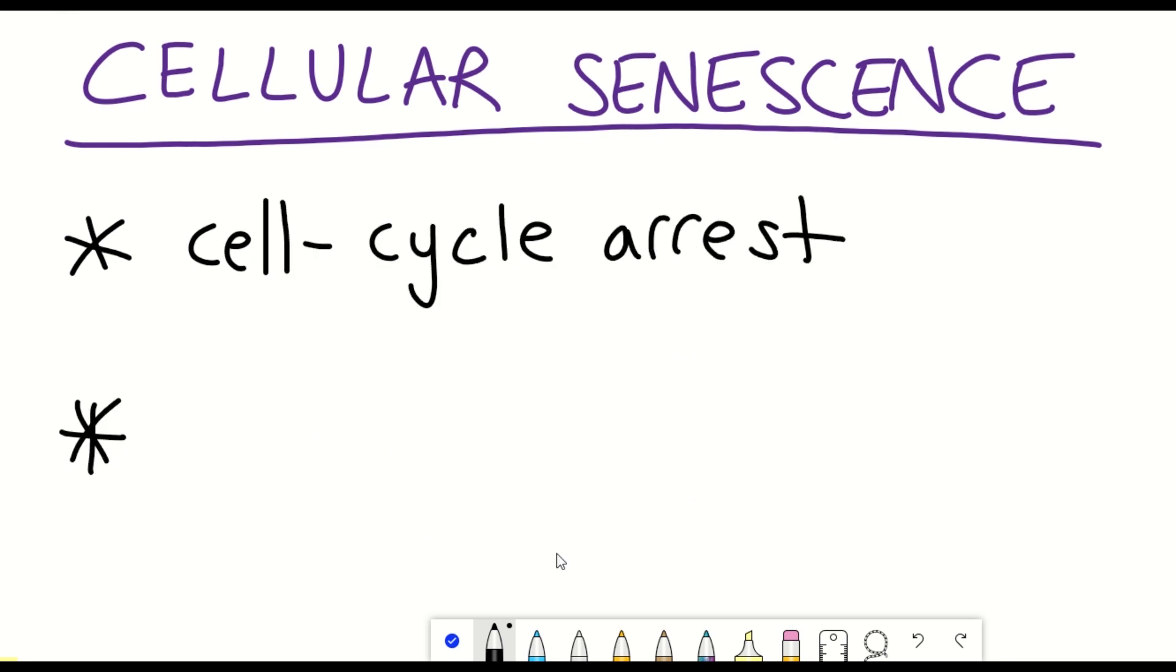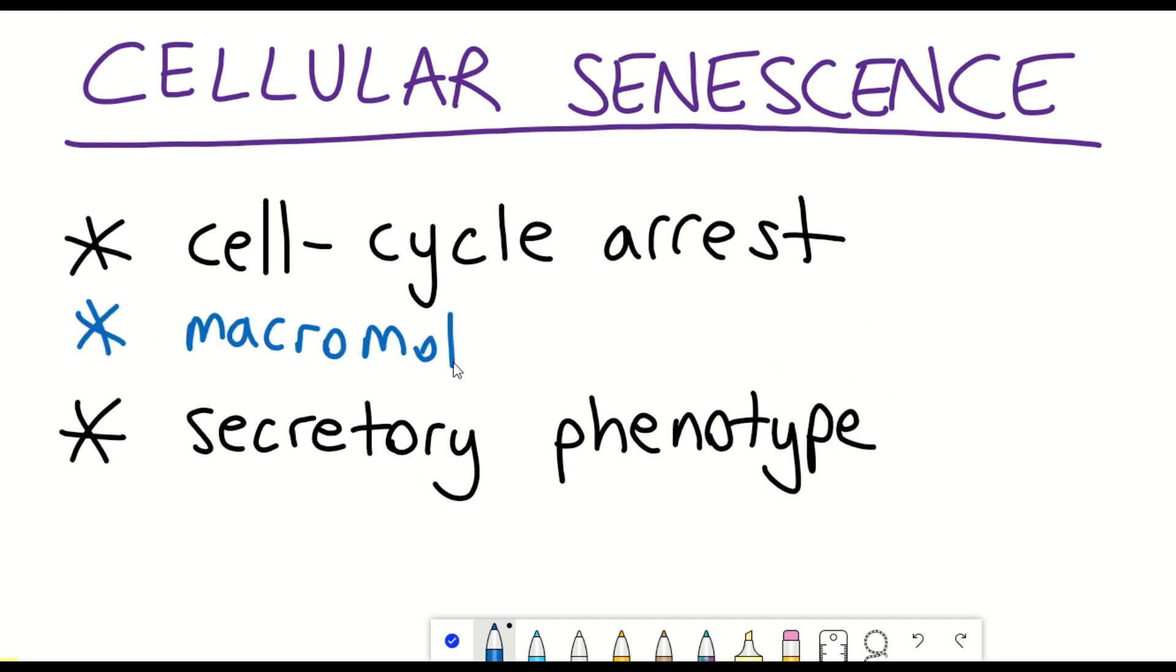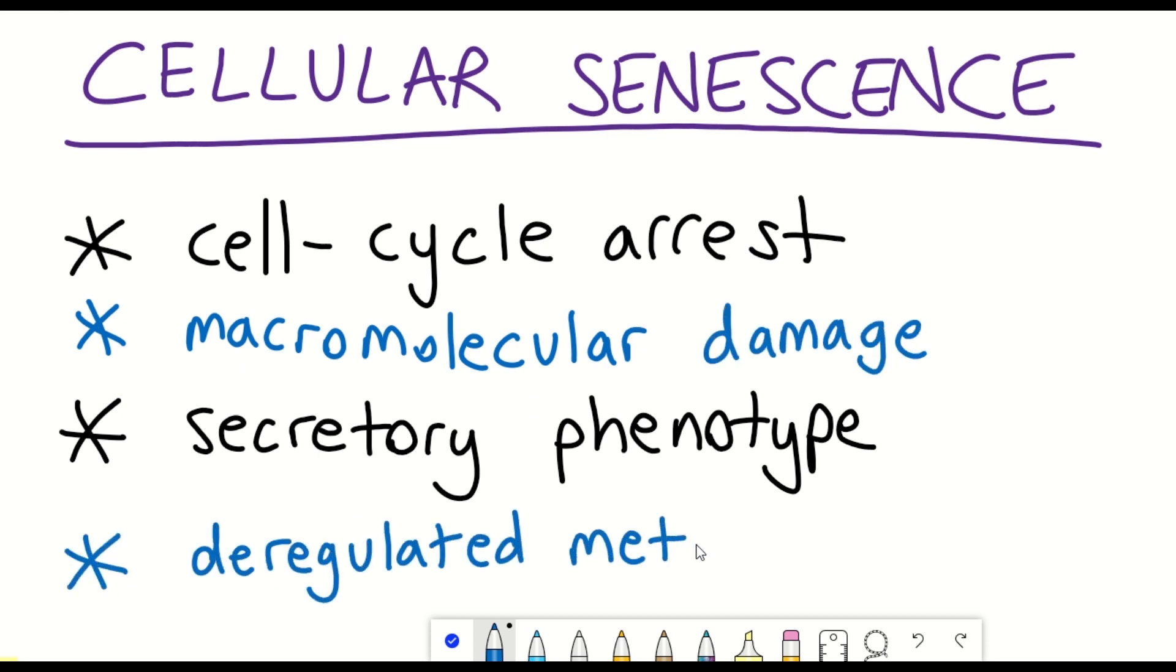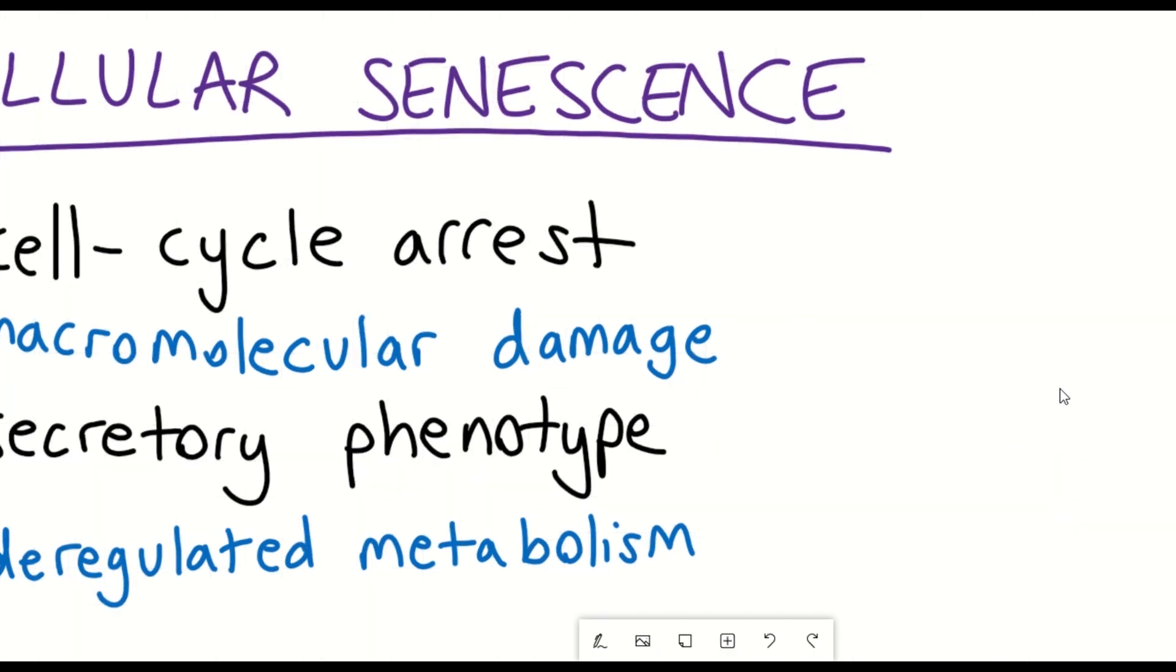In addition to cell cycle arrest and the secretory phenotype, senescent cells are also characterized by macromolecular damage and a deregulated metabolic profile. But it's important to remember that these four different hallmarks are not independent, they are also interdependent and depend on each other, and so it's somewhat better to think of cellular senescence as a collective phenotype.